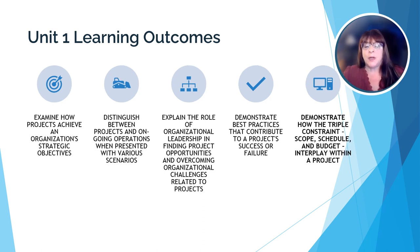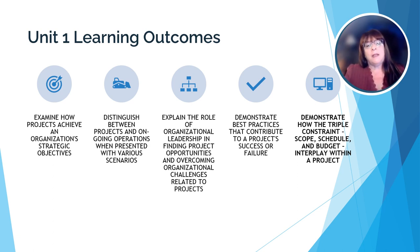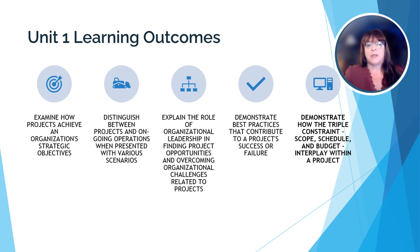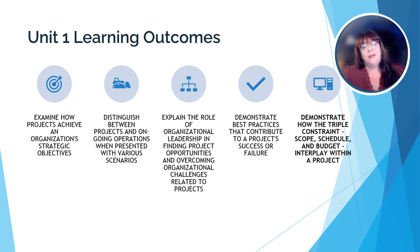Finally, we'll demonstrate how the triple constraint — scope, schedule, and budget — interplay within a project. We'll look at what's called the triple constraint of project management: the three major elements of a project that work together towards successful completion or the failure of the project, those being scope, schedule, and budget.